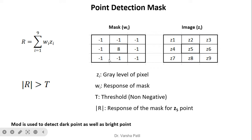Around the center, the values are minus one, and in the center, eight is placed. We take the result of the mask on a particular point. The image is represented as z1 to z9 intensity or gray-level values, with z5 as the point under consideration. We multiply the intensity values with the mask values, take the summation, then take the absolute value, and compare with the threshold.